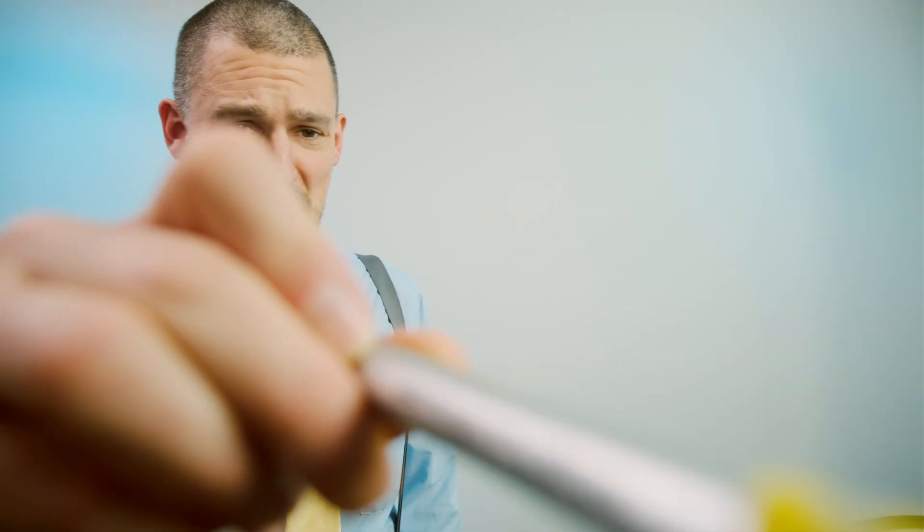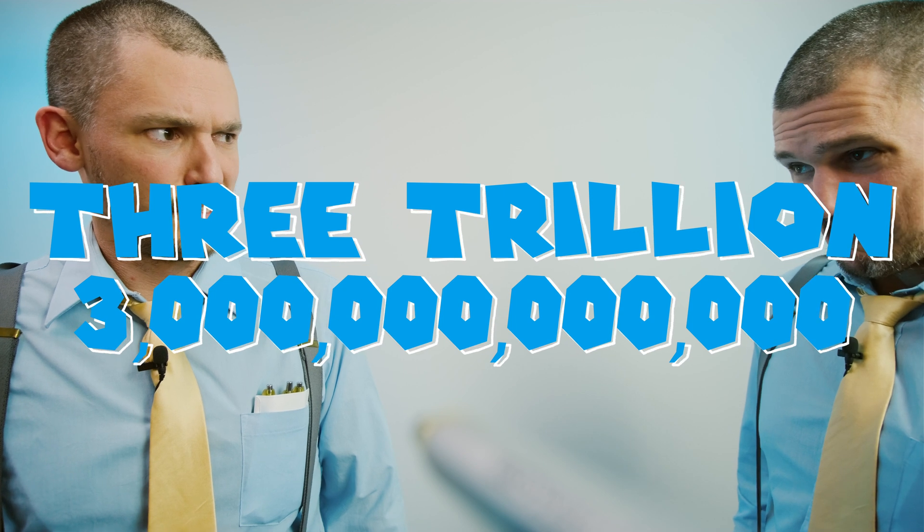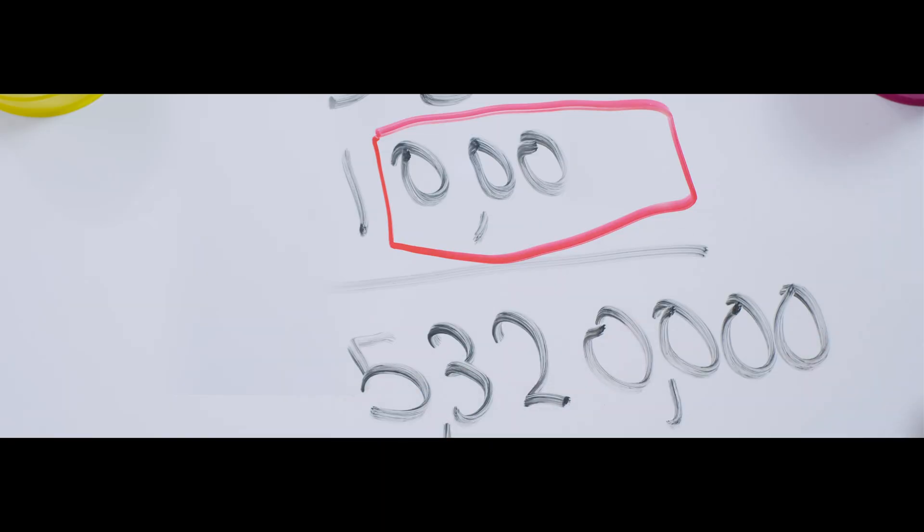We only overspent by three trillion dollars this year. Yeah, I'm going to take care of that. I'm just going to—you can't do that—move the decimal over three places after dividing by a thousand. Problem solved.